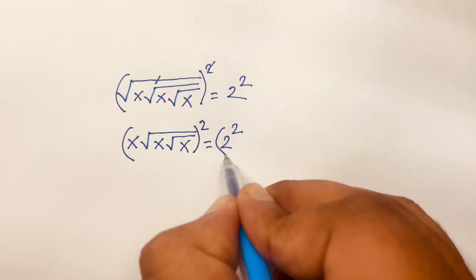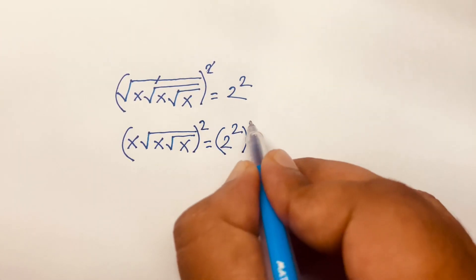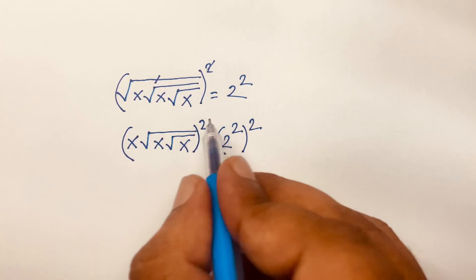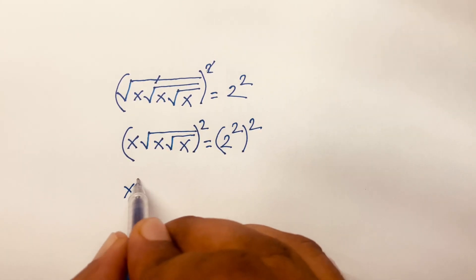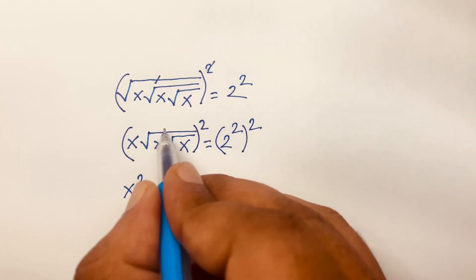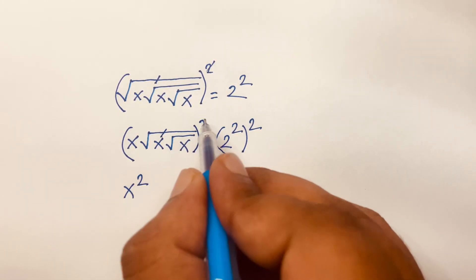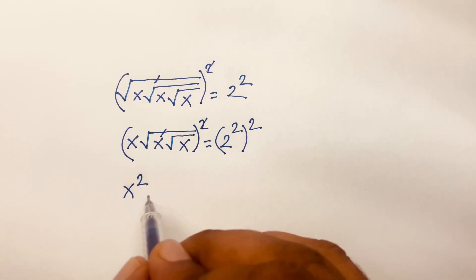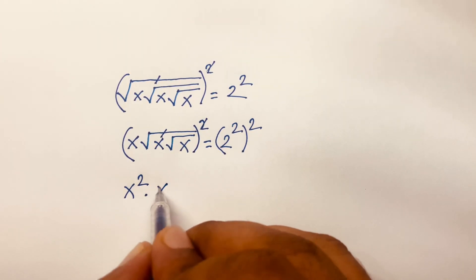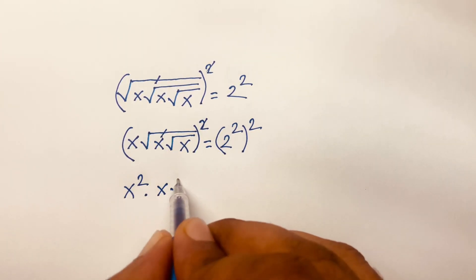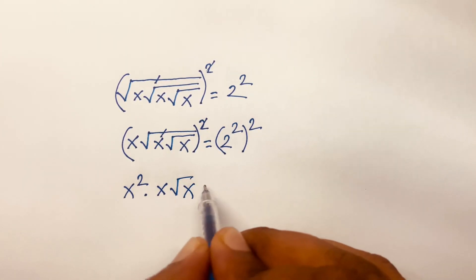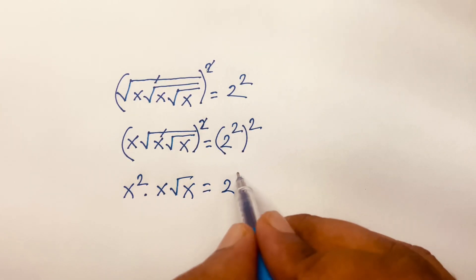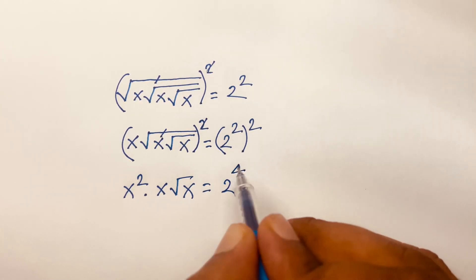Then I use both sides whole square again. It will be x squared, and the square root and square cancel, so we find x squared times square root of x is equal to 2 to the power 2 times 2, which is 4.